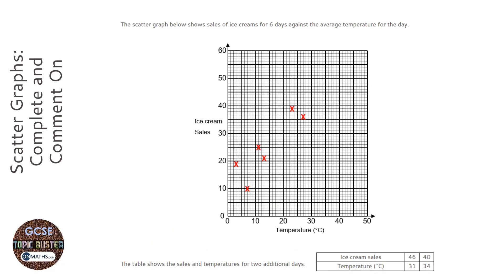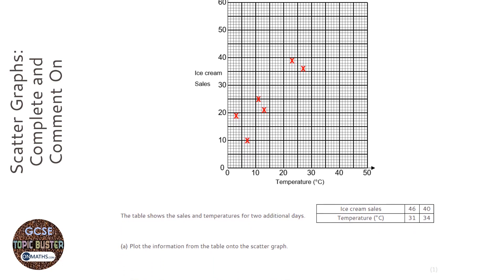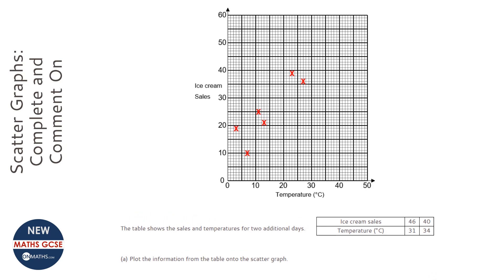We've got a scatter graph question. The first question asks us to plot the information from the table onto the scatter graph. We've got ice cream sales at the top and temperature at the bottom, which is not the same way around as on the graph, so we need to be careful.